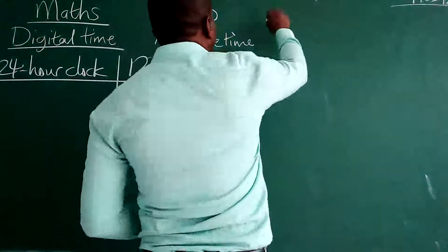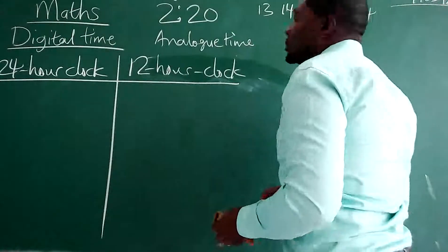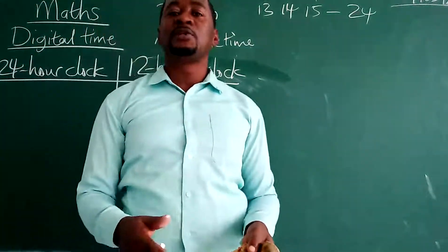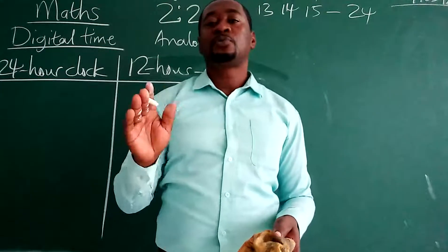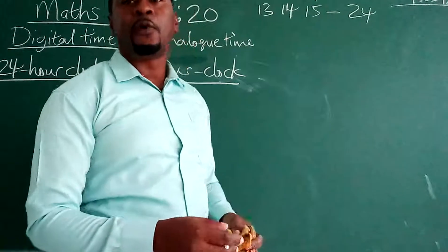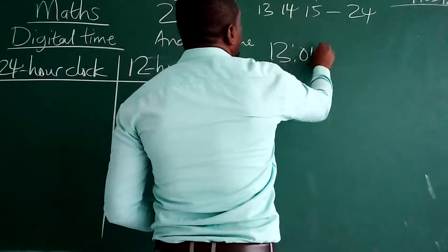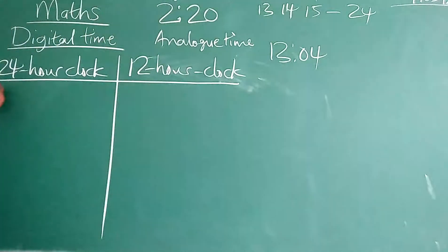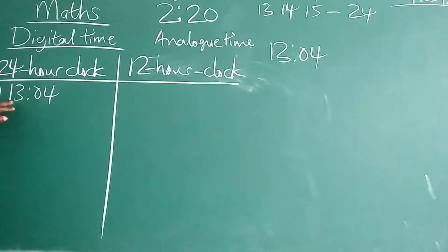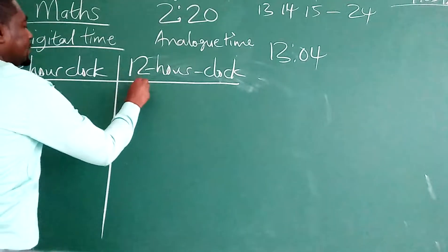For 24-hour clock, it starts from 13, 14, 15, up to 24. So if we have 13:04 on the 24-hour clock, when you remove 12 from 13 you get 1, so on the 12-hour clock it will be 1:04.